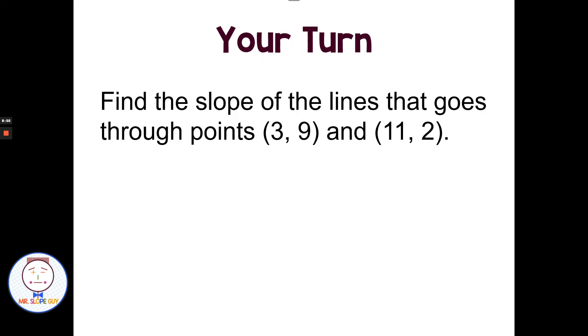All right, pause the video here and you guys find the slope of a line that goes through points (3, 9) and (11, 2), and then start the video back and see how you did. Hi, welcome back, everybody. Let's see. Let's put this into the slope formula. We have 2 minus 9, we have 11 minus 3, and 2 minus 9 is -7. 11 minus 3 is 8, and our slope is -7/8. Hopefully everybody got that right.